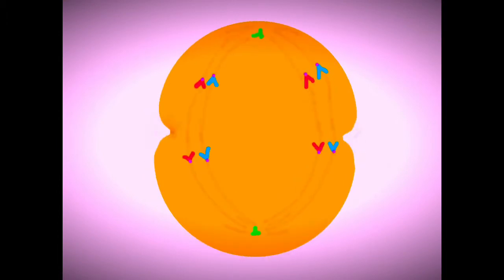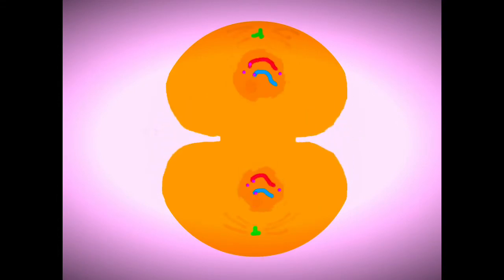In meiosis, the DNA strands thicken into chromosomes. Homologous or like chromosomes begin to approach each other. Homologous chromosomes pair to form bivalents.